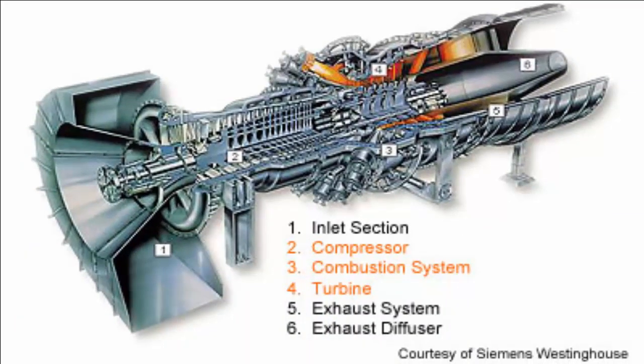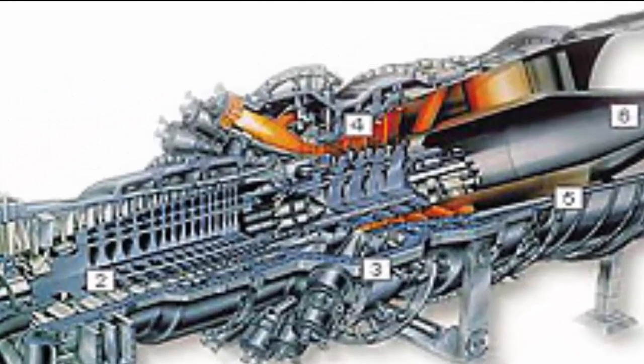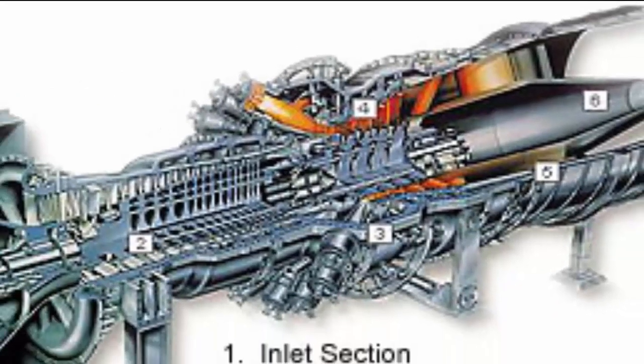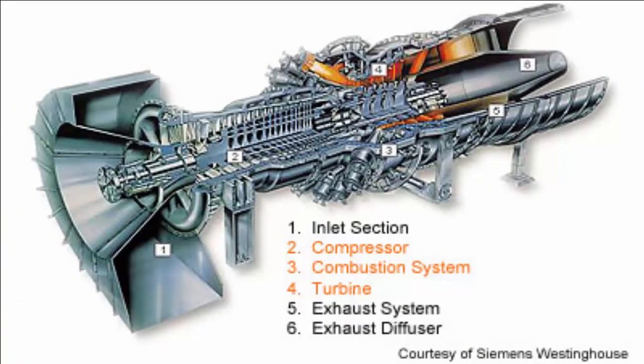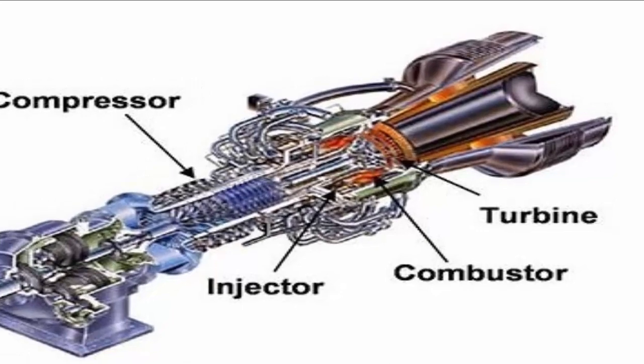The combustion produces a high-temperature, high-pressure gas stream that enters and expands through the turbine section. The turbine is an intricate array of alternate stationary and rotating airfoil section blades. As hot combustion gas expands through the turbine, it spins the rotating blades. The rotating blades perform a dual function: they drive the compressor to draw more pressurized air into the combustion section, and they spin a generator to produce electricity.